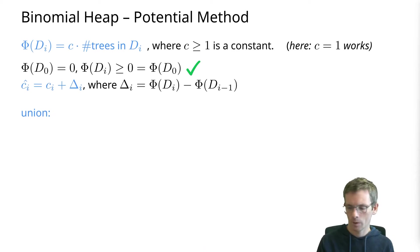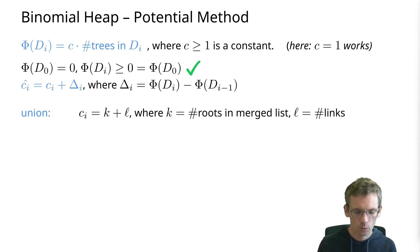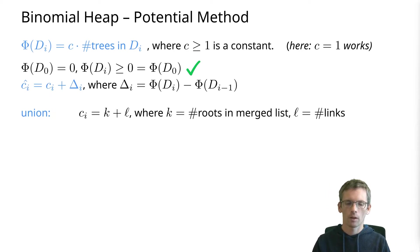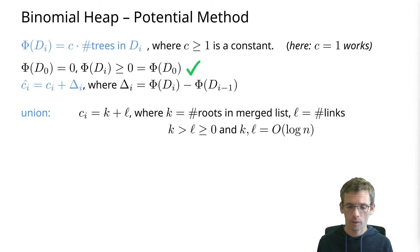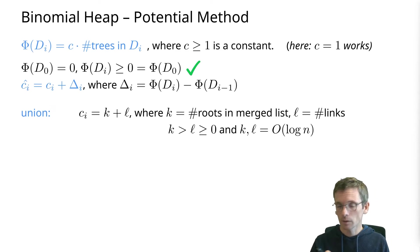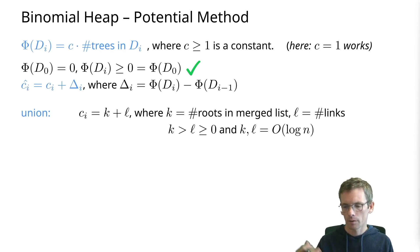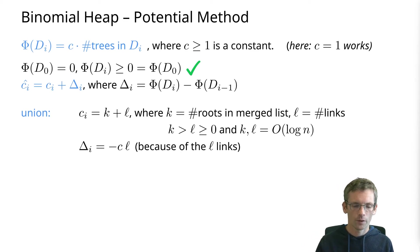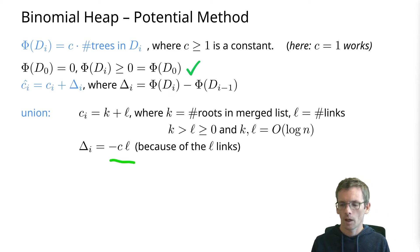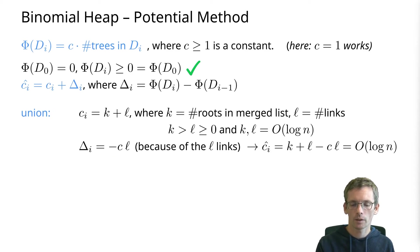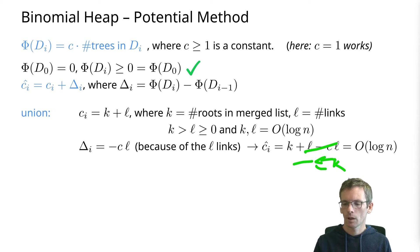For union: the actual cost depends on the number of roots in the merged list plus how often we do linking. The actual cost is k plus l, where both k and l are O(log n) since we have O(log n) roots and at most that many minus one links. For the change in potential: with every link we lose a tree, so the change in potential is minus c times l (the number of links). The amortized cost is k plus l minus c times l, which is at most k, and k is O(log n).